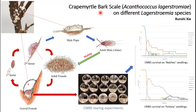Quakemoto bark scale is a non-native pest species here in the United States and it originated from East Asia. The top left image here shows you what an infestation of this insect looks like on a small quakemoto plant, and the diagram here shows you the life history of quakemoto bark scale.